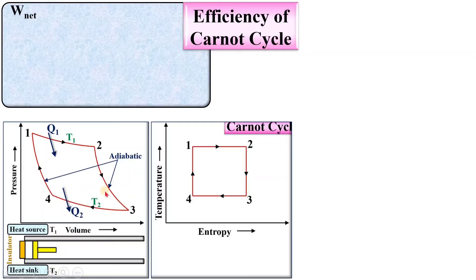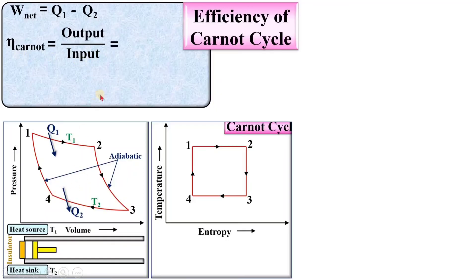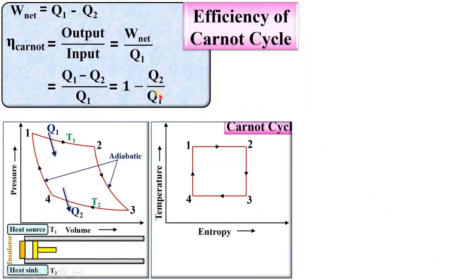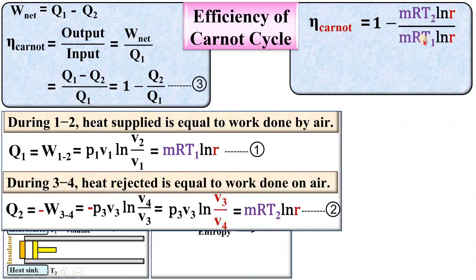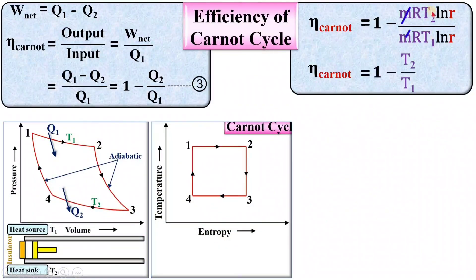Net work done during the cycle equals Q1 minus Q2. The efficiency of the Carnot cycle is output upon input: η = W_net / Q1 = (Q1 − Q2) / Q1 = 1 − Q2/Q1. Substituting equations 1 and 2, this simplifies to η = 1 − T2/T1, which is the final desired equation for the efficiency of the Carnot cycle.